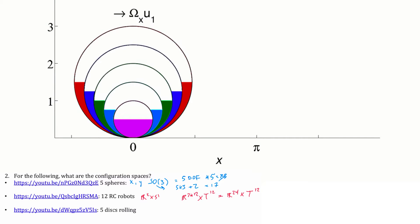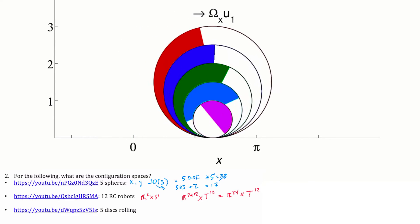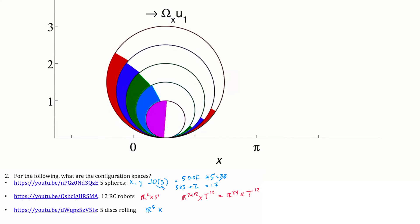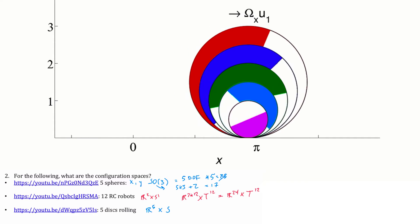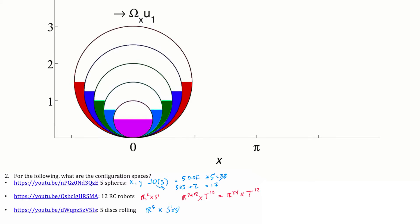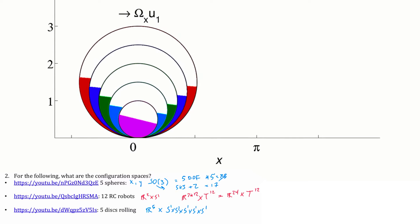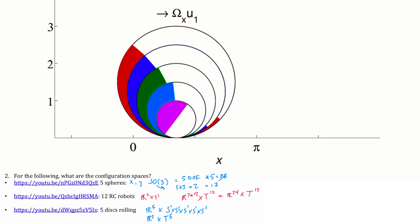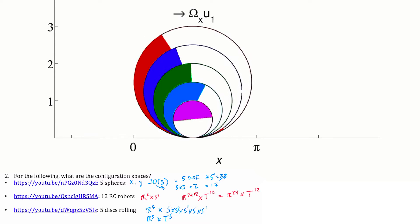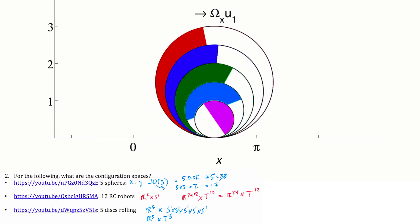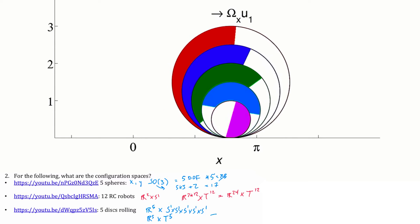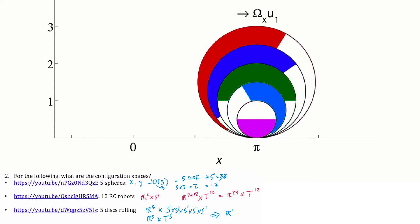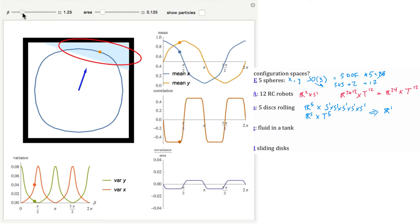Now with five rolling discs — if there were no constraints, each would have an X position, giving R⁵ cross S¹ cross S¹ cross S¹ cross S¹ cross S¹, or R⁵ cross the five-dimensional torus. However, there's a constraint: they all roll the same distance, so their orientation is really just a function of that. This reduces to R¹ — only one degree of freedom in the configuration space.